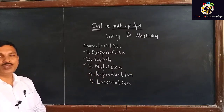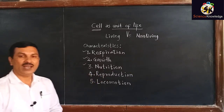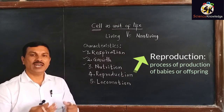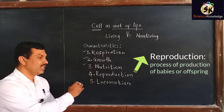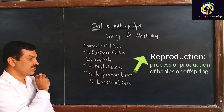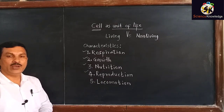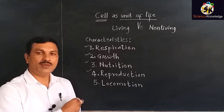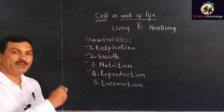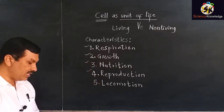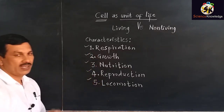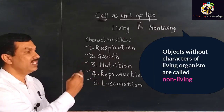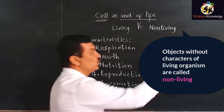The living organisms will also show reproduction — they have a tendency to produce a number of individuals which are similar to the parent. This process is called as reproduction. And finally, the living organisms show locomotion, that is movement either from one direction to another direction or from one place to another place. If objects do not show either of these characteristics, then they are called as non-living.